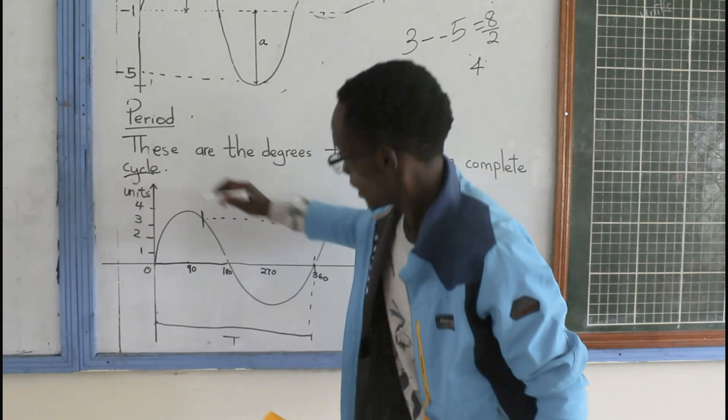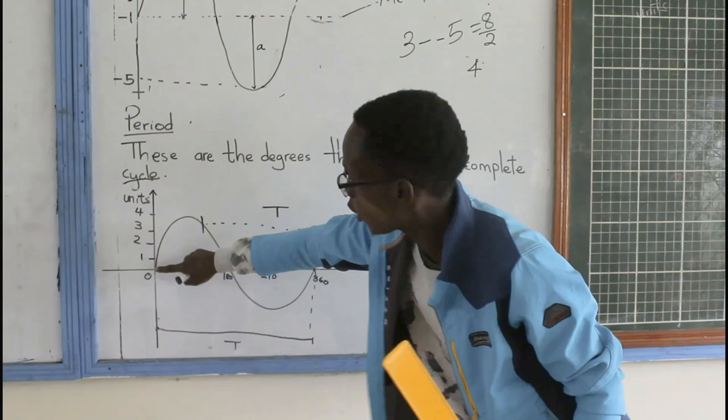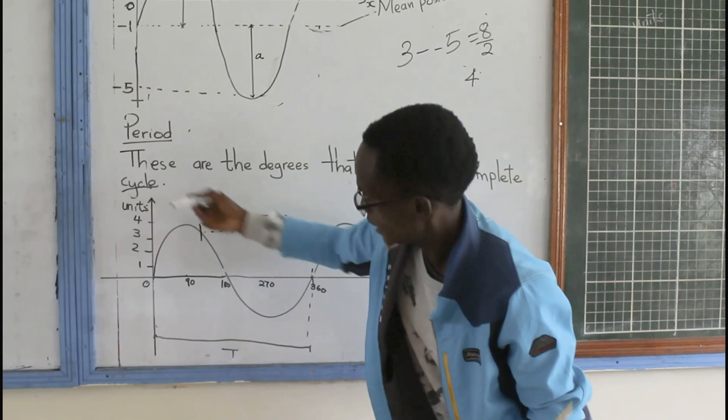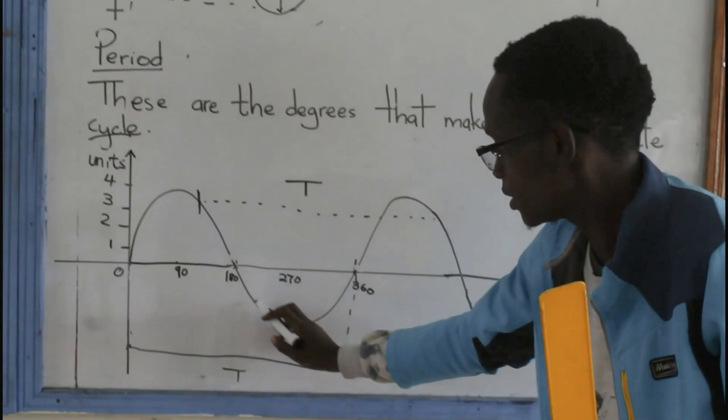A cycle comprises of two things. A crest, a complete crest, and a complete trough. So, for my case here, this is my complete crest. It is here, and now this is the trough.